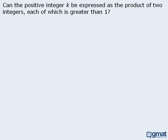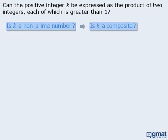Here's another example. Can the positive integer k be expressed as the product of two integers, each of which is greater than 1? This is a good example of the importance of rewording the target question. Prime numbers can only be written as the product of 1 and the number itself, so if k can be expressed as the product of two integers each greater than 1, that means k is not prime. So the question is asking: is k a non-prime number? In other words, is k a composite number? The original question is just a tricky way to ask whether k is a composite number.